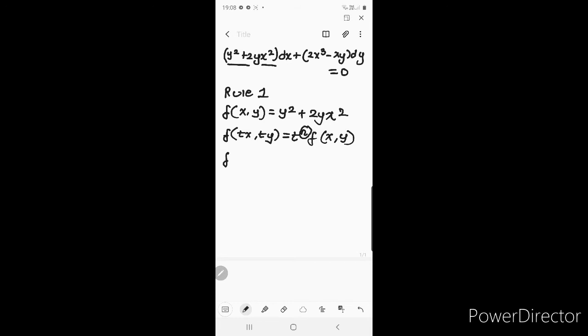Now let me substitute f(tx, ty). This will give me, now y I will replace as ty: (ty)² + 2(ty)(tx)², which will give me t²y² + 2t³yx².